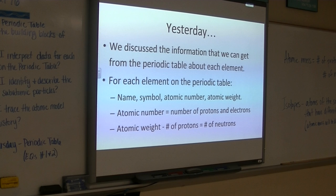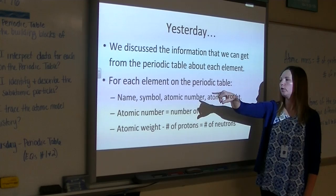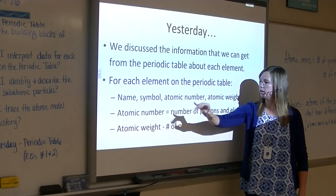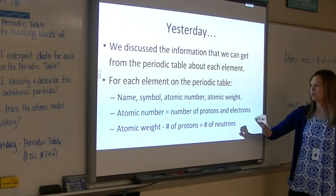Okay, so yesterday these are the things we discussed. We discussed the information that we get from the periodic table about each element. So we get the name, symbol, atomic number, atomic weight or atomic mass. We talked about the fact that the atomic number is equal to the number of protons and electrons, and that the atomic weight minus the number of protons is equal to the number of neutrons.